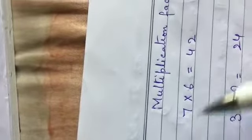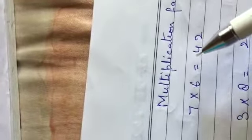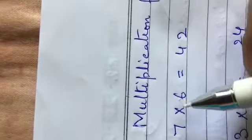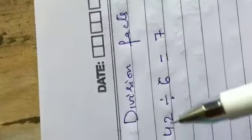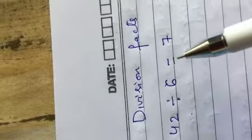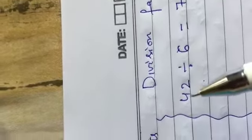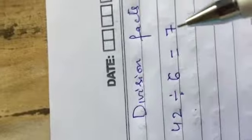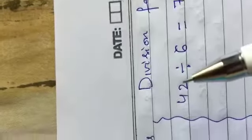Now we will be going in reverse order. We have written 42, so next we write the number 6 over here, and what is left is 7, so we put an equal to sign and write 7. So the division fact formed from this multiplication fact is: 42 divided by 6 is equal to 7. When 42 is divided by 6, we get 7.